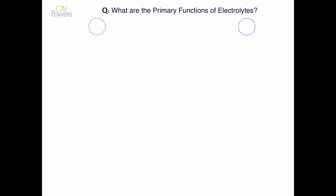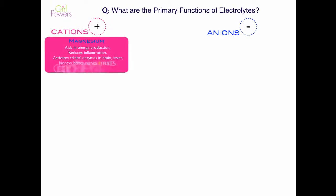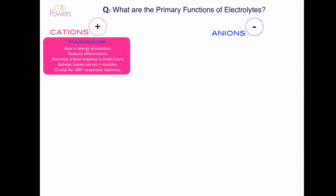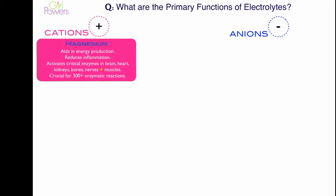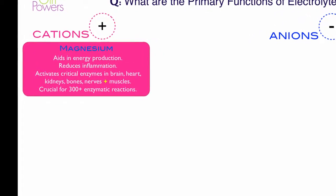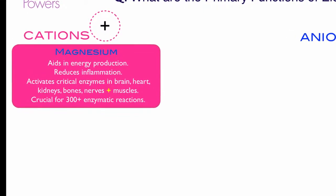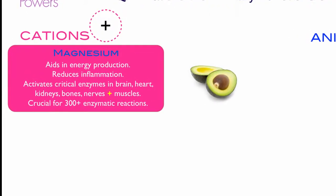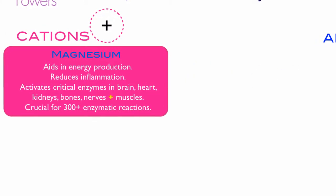So what are the primary functions of electrolytes? We'll look at each one individually, starting with the cations. Magnesium aids in energy production, reduces inflammation, and activates critical enzymes in the brain, heart, kidneys, bones, nerves, and muscles — pretty much your whole body. It's crucial for 300-plus enzymatic reactions. Magnesium is found naturally in avocados, spinach, nuts, and certain fish.